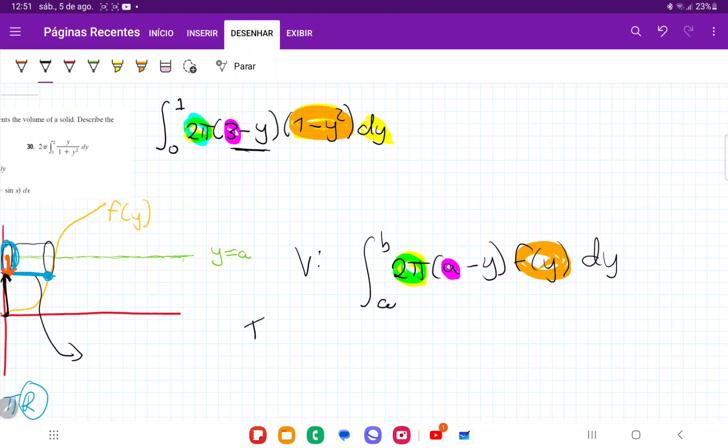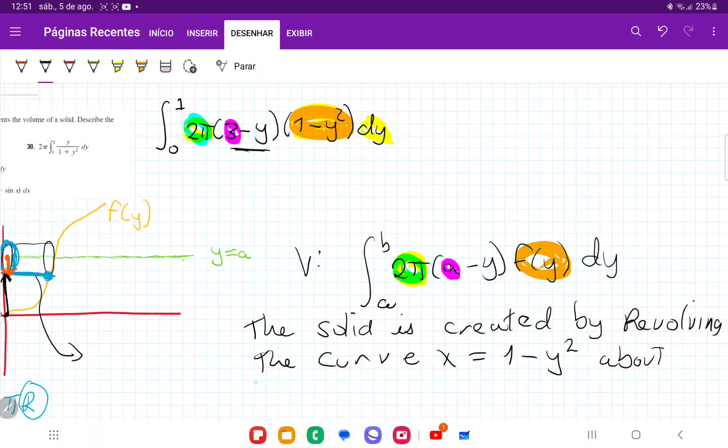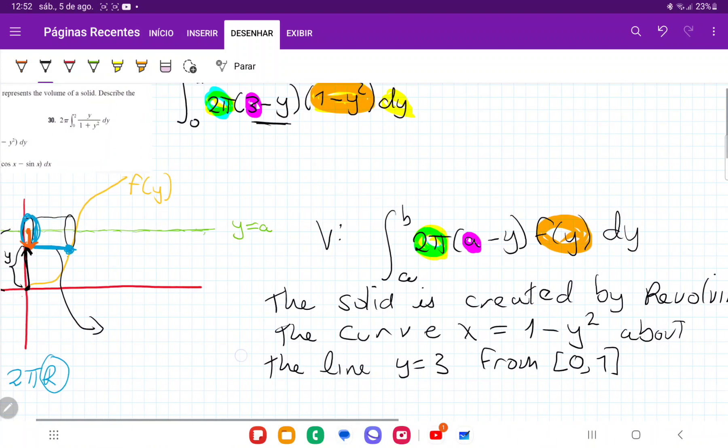The solid is created by revolving the curve x is equal to 1 minus y squared about the line y is equal to three from zero to one. And that's what we get.